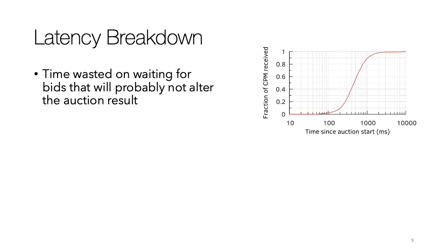To keep auctions short, publishers set deadlines after which any bids that arrive are just discarded. A typical deadline is about two to three seconds. But as we see in this graph — time since auction start on the x-axis and fraction of CPM received on the y-axis — about 90% of the CPM is received within the first second. So by setting longer deadlines like three seconds, publishers are wasting time waiting for bids that will probably not alter the result of the auction. They could shorten the deadlines and save some time.